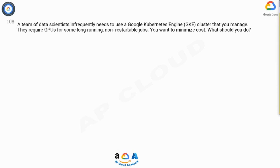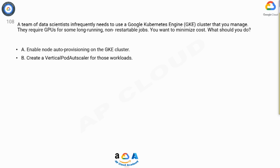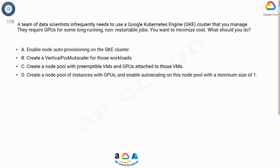Question 108: A team of data scientists infrequently needs to use a Google Kubernetes Engine (GKE) cluster that you manage. They require GPUs for some long-running, non-restartable jobs. You want to minimize cost. What should you do? A: Enable node auto-provisioning on the GKE cluster. B: Create a vertical pod autoscaler for those workloads.